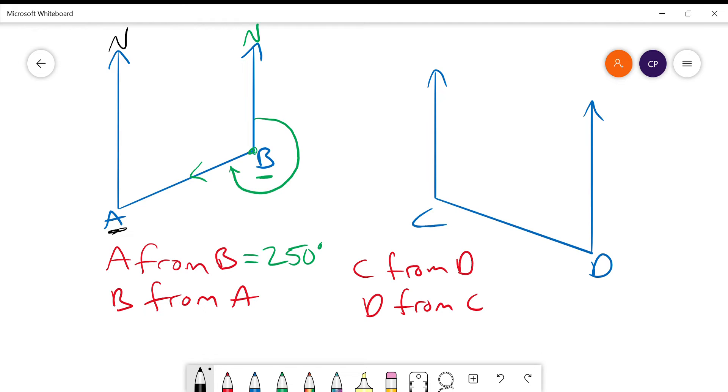We set our protractor to zero there, make sure the centre's at A and I measure around to get the bearing that goes from north all the way around heading towards B. For this one I get 70 degrees,